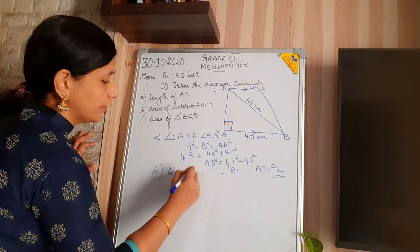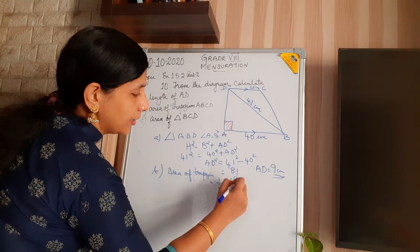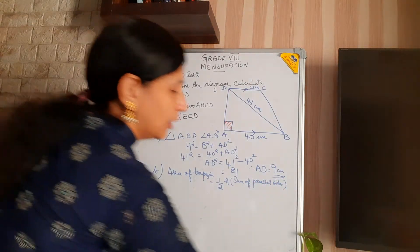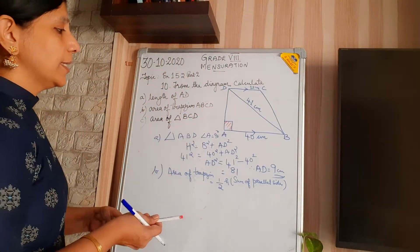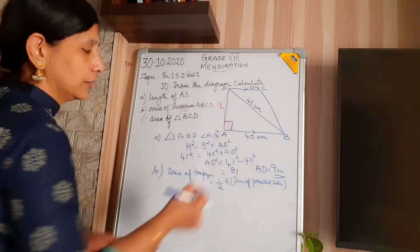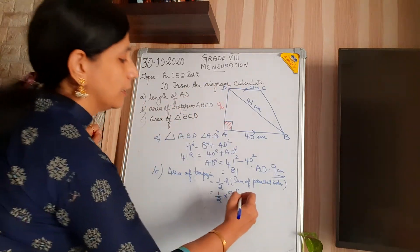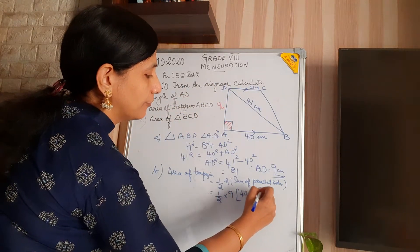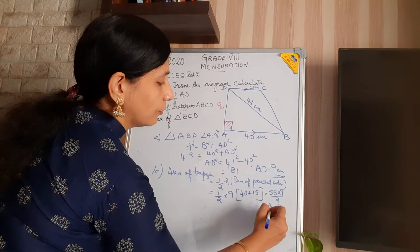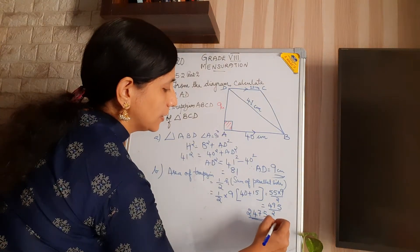The second part is the area of the trapezium. The formula for area of trapezium is half × H × sum of parallel sides. H is 9 centimetres after the calculation. The two parallel sides — you can see the arrow marks — are 40 and 15. So it is half × 9 × (40 + 15) = half × 9 × 55 = 495 ÷ 2 = 247.5 centimetres square.